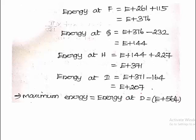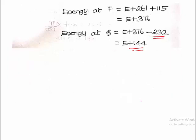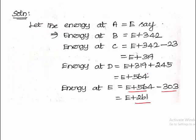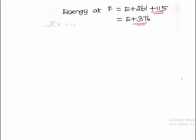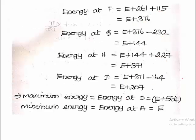Now we know the energy at various points A, B, C, D, E, F, G, H, I. From these values we can see the maximum energy is at point D, with value E plus 564. This is the maximum energy E1. The minimum energy is at point A, which is E.